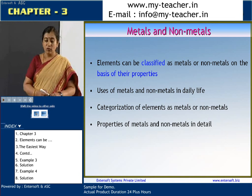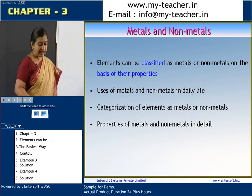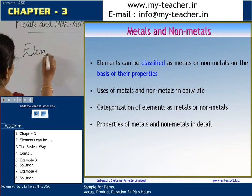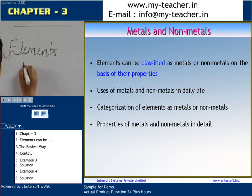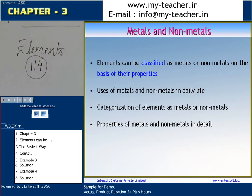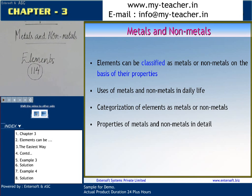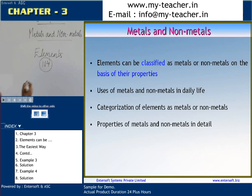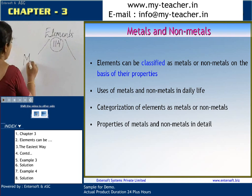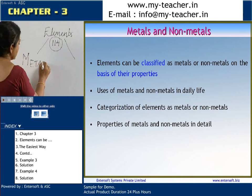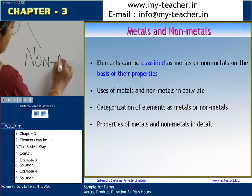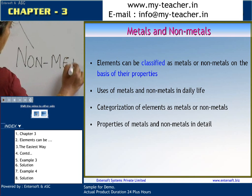Now, in your class 9, you have also learnt about various elements. In total, you are aware of about 114 elements. These elements can be classified under two categories: metals and non-metals.